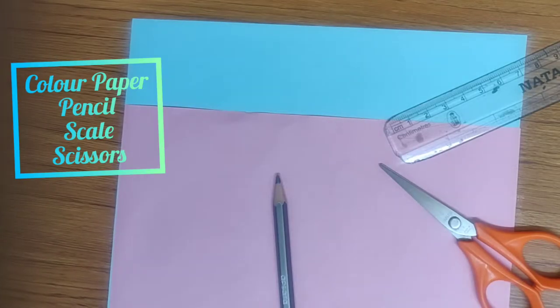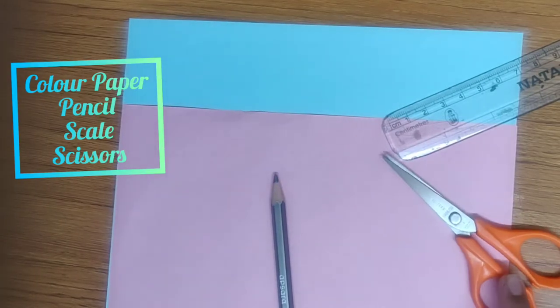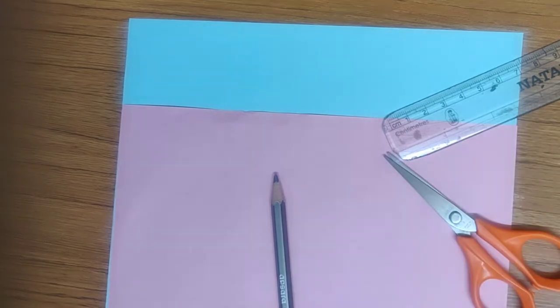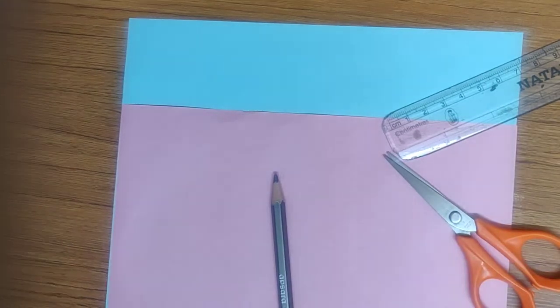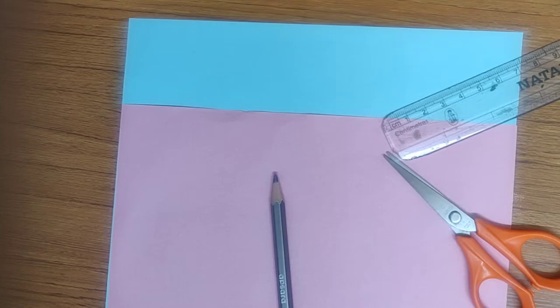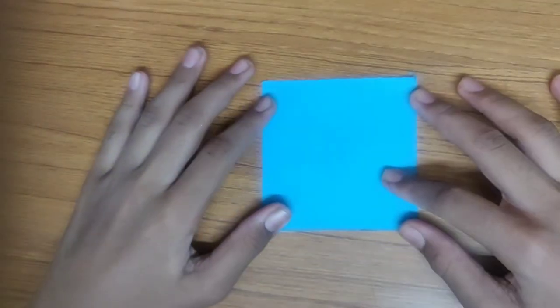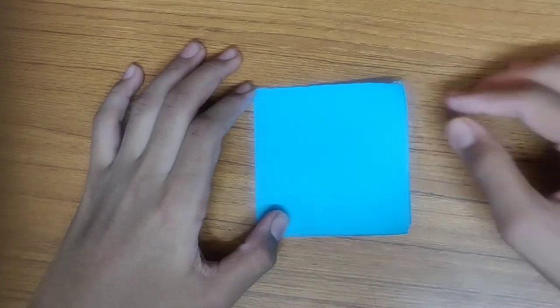So to make this, you will need color sheets, a scissor, a scale and a pencil. So let's get started. So this is an 8cm x 8cm square sheet of paper.